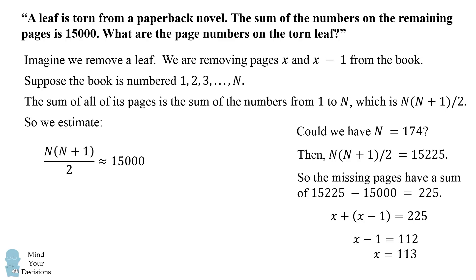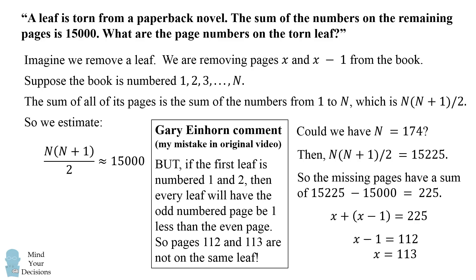But as many of you pointed out — and Gary Einhorn was the first commenter I saw who pointed out this mistake in the original video — if the first leaf is numbered 1 and 2, then every leaf will have the odd-numbered page be one less than the even page. So pages 112 and 113 are not on the same leaf. This could not be the answer because 112 and 113 aren't on the same physical sheet of paper.